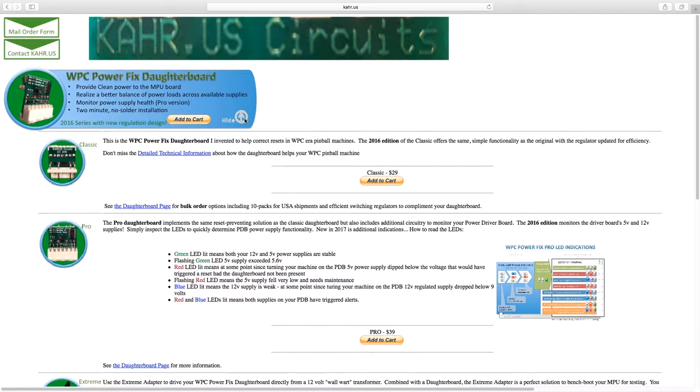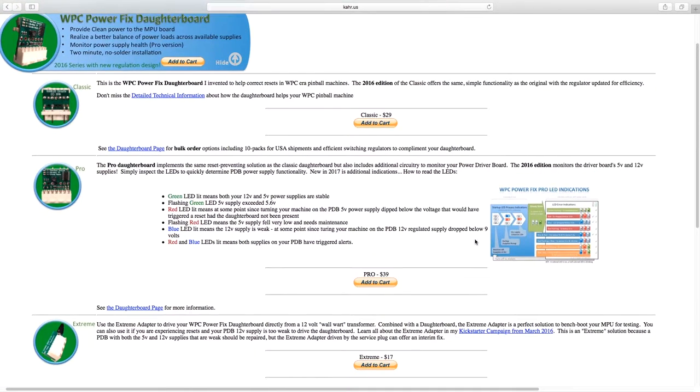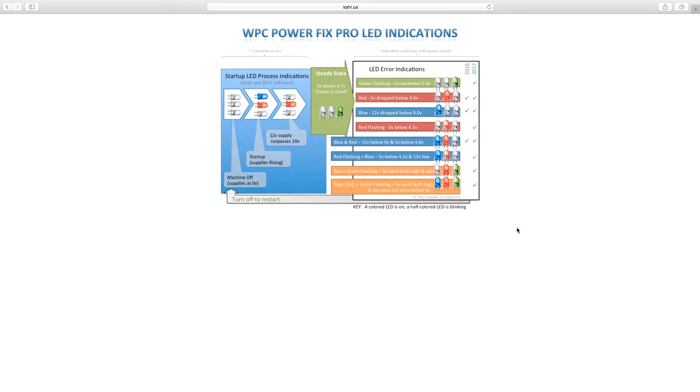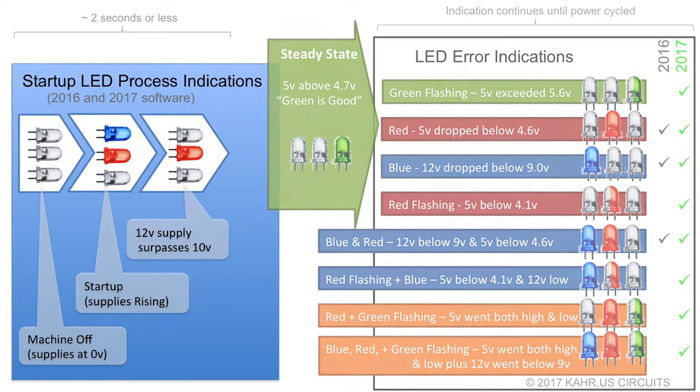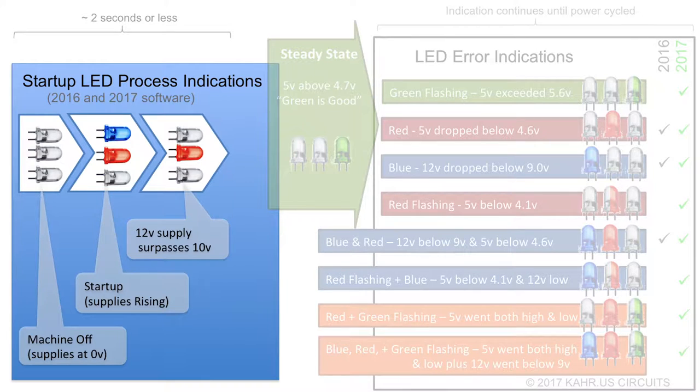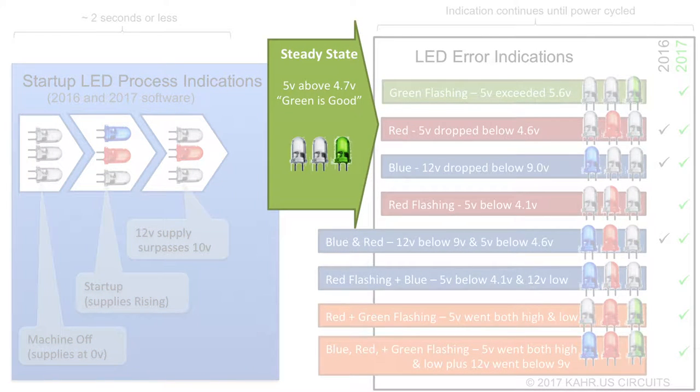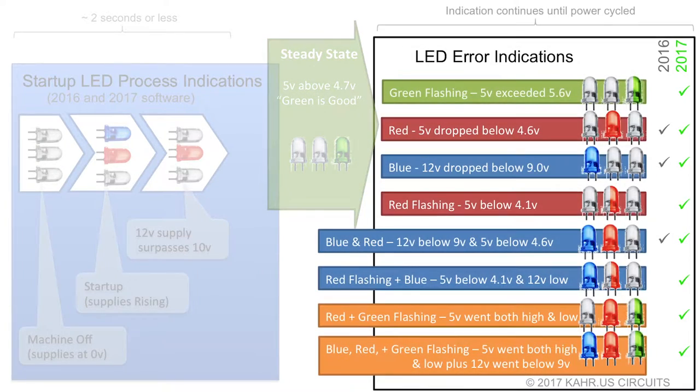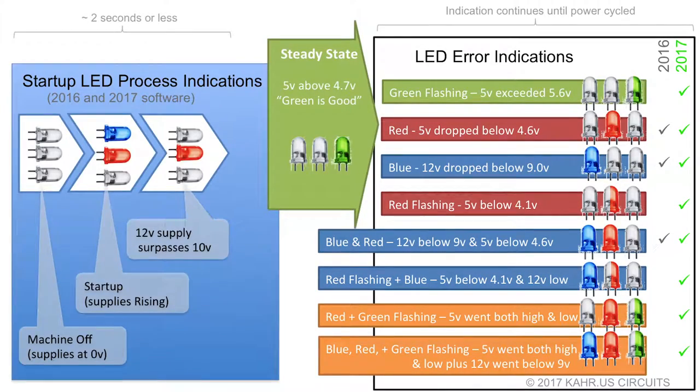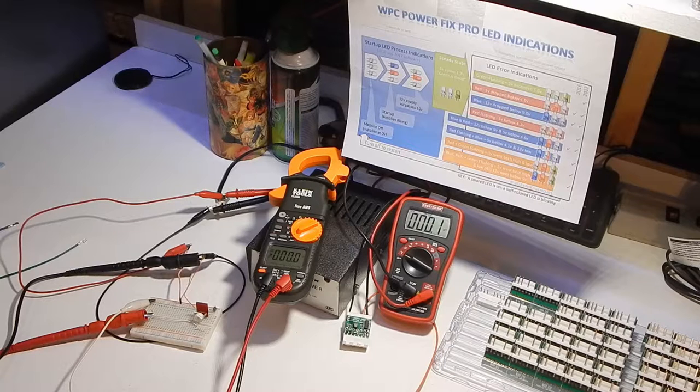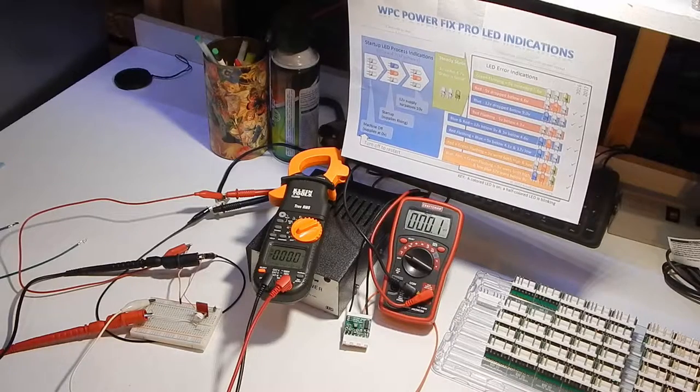I am going to refer to a graphic found here on my website as we walk through the daughterboard's functionality. We'll start with the startup sequence on the left side, move to the steady state in the center, and then through each of the possible voltage error indications. We'll use a test bench setup to step through these states because hoping for them to occur while the board is installed in one of my machines probably isn't the best use of video time. Let's start.